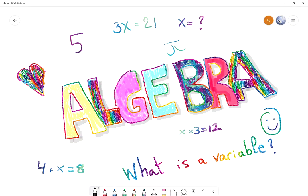So today we're going to learn what is a variable. So Natalie, what is a variable to you? It's a mystery number in an equation.